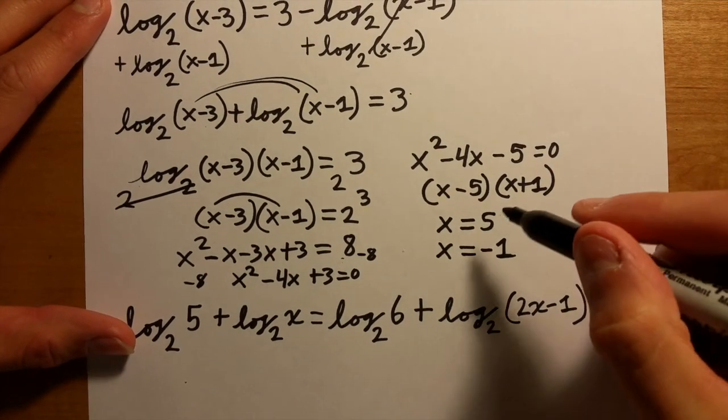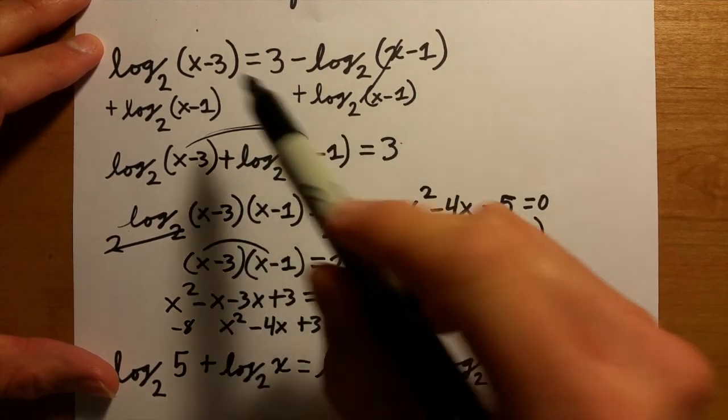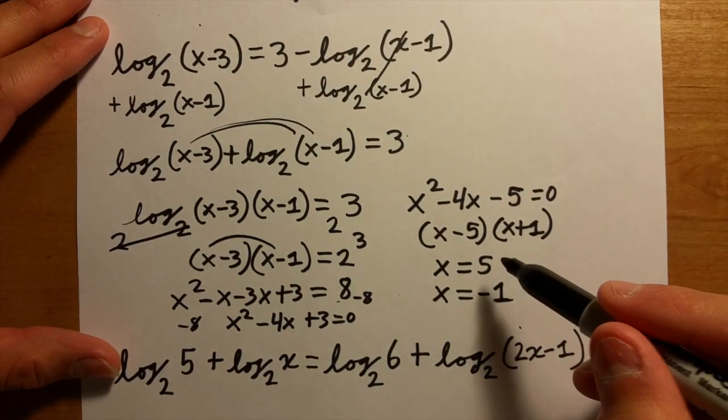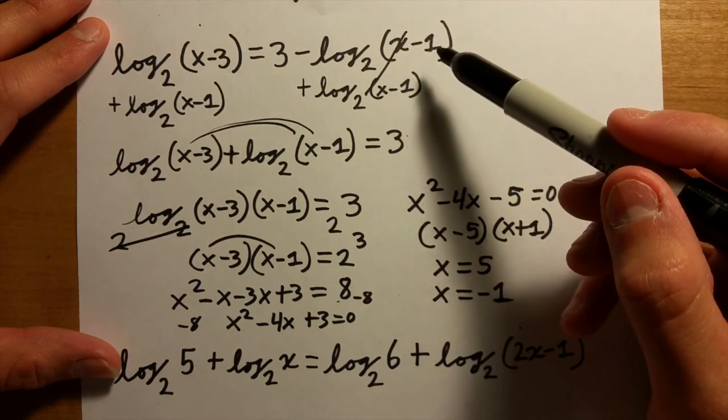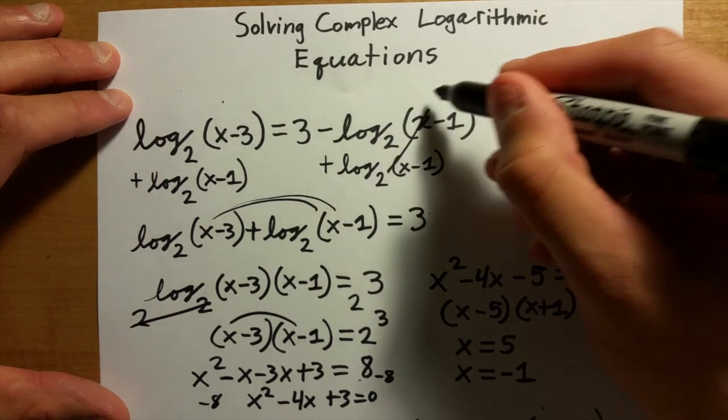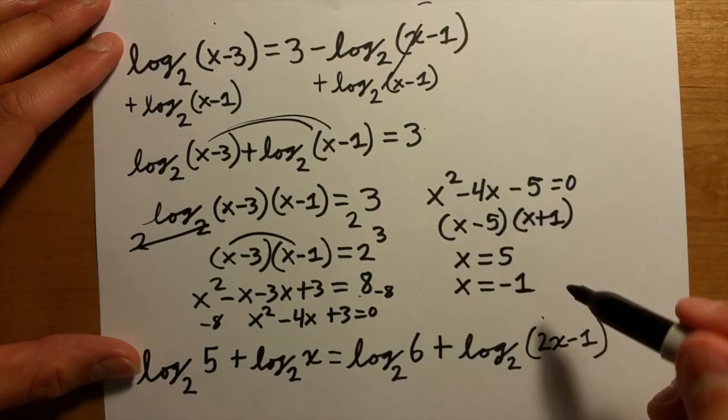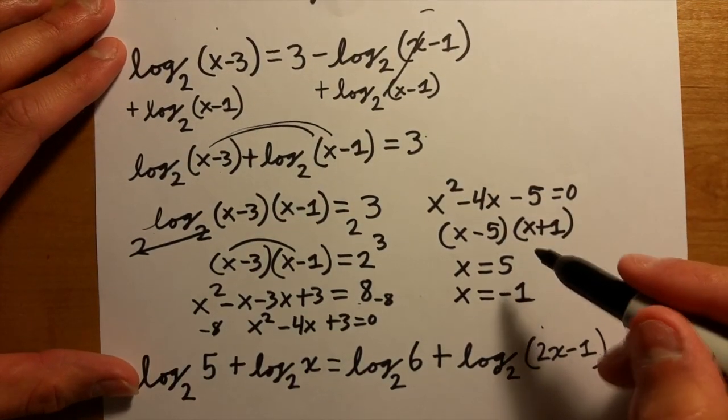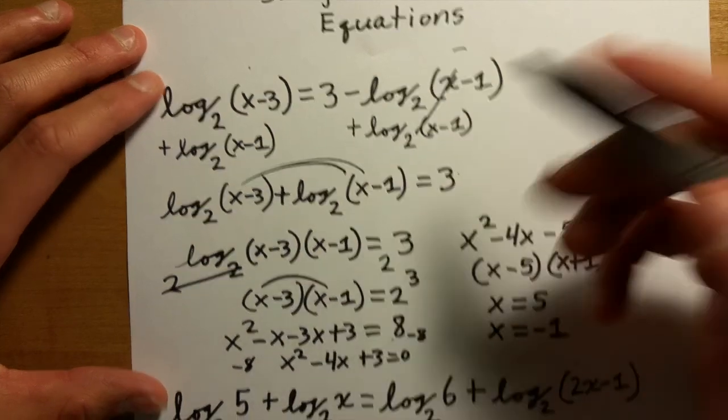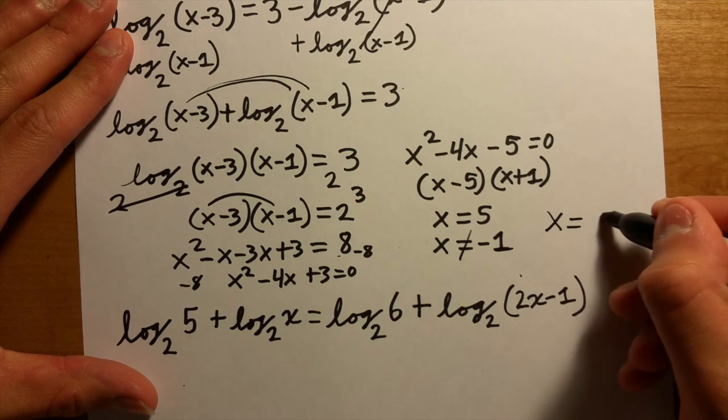But when you get to this point you have to be careful because only one answer works for anything that has a logarithm or natural log. You need to check. If you plug 5 back in to both of these, it's 5-1 which is okay, because remember that inside the logarithm you can never have a negative number. It has to be positive or zero. So x = 5 does work out, but -1 doesn't because -1 minus 1 is -2 and -1 minus 3 is -4. So it can't be x = -1. Your answer is only x = 5.